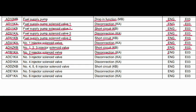Code ADC1KA. Where is the problem? Number 3 injector solenoid valve. What is the problem? Disconnection. Engine control system is related to this fault, and the action code is E03. Code AD1KA — where is the problem? Number 4 injector solenoid valve. What is the problem? Disconnection. Engine controller system is related to this fault, and the action code is E03.